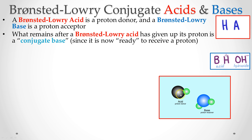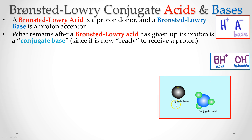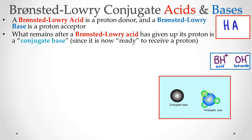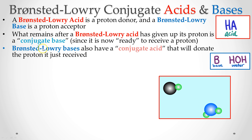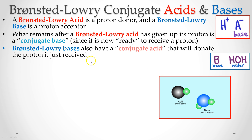So we start with an acid — a proton donor — and a base — a proton receiver. The proton goes from the acid to the base. What's left is called a conjugate base, and what the base becomes is called a conjugate acid, because that one is now ready to donate a proton. Brønsted-Lowry bases also have a conjugate acid, and that conjugate acid is going to donate the proton it just received.